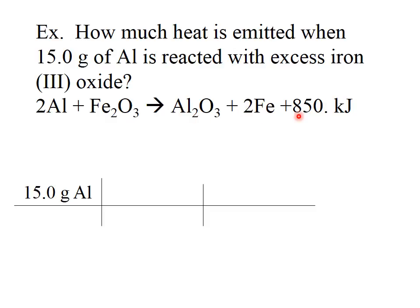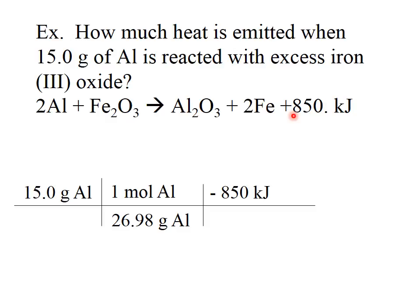Looking at the balanced equation: 2 moles of aluminum and 1 mole of iron(III) oxide produce 1 mole of aluminum oxide, 2 moles of iron, and 850 kilojoules of heat. Since heat is emitted or produced, your answer should be negative. We start with 15.0 grams of aluminum, convert grams to moles of aluminum, then use the equation to find kilojoules. The relationship is: negative 850 kilojoules is produced for every 2 moles of aluminum.